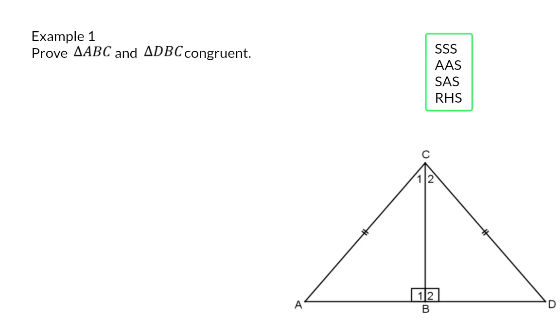In our sketch, they indicated that side AC and side DC are equal, so we have a pair of sides. We also have that angle B1 and angle B2 are both 90 degrees and thus equal. So this can either be a pair of angles or a pair of right angles.